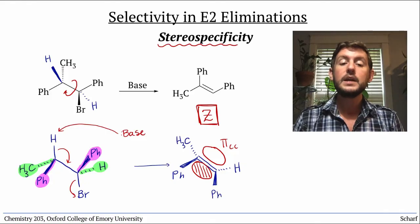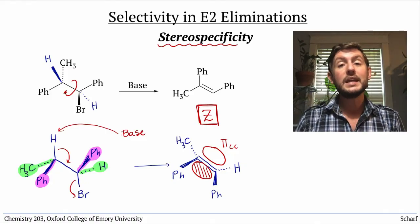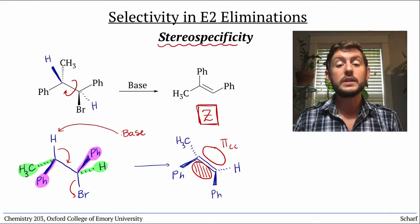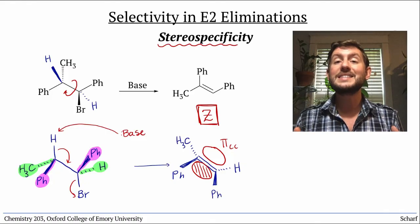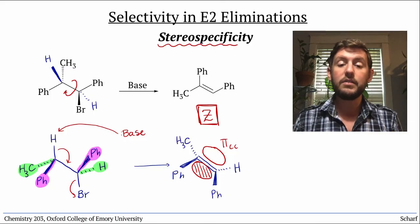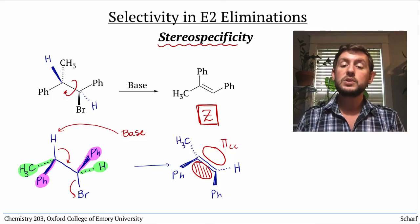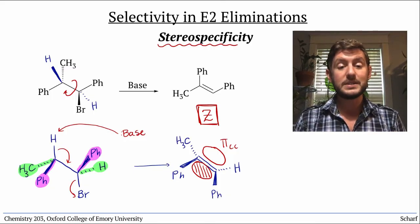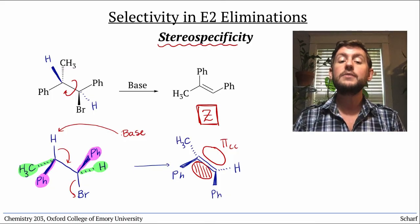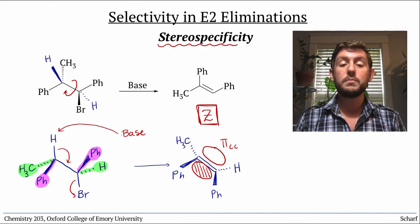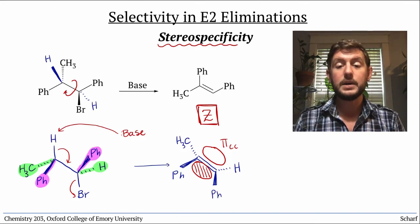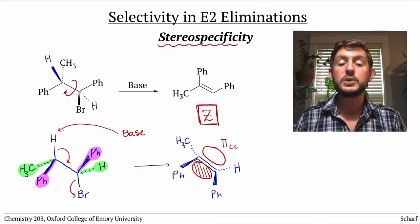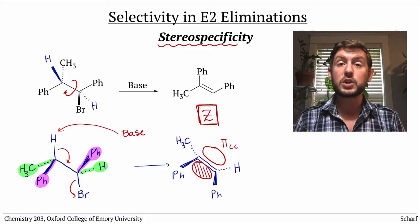The E2 reaction in general is stereoselective, but certain examples are stereospecific if they have only one possible stereochemical outcome based on the particular configuration of the starting material.